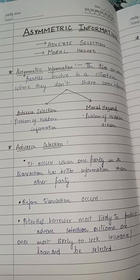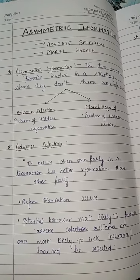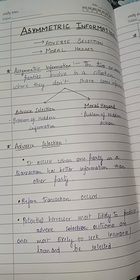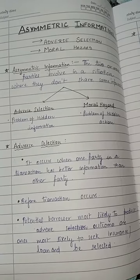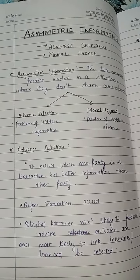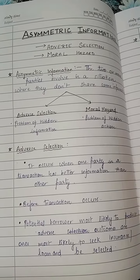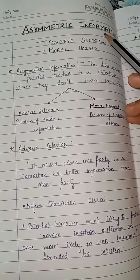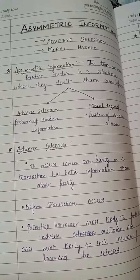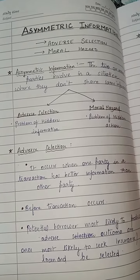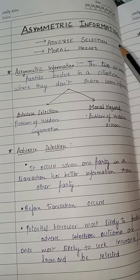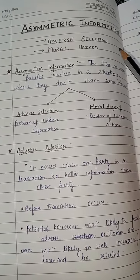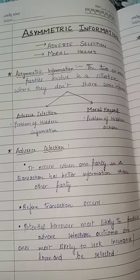Hello everybody, welcome back to my YouTube channel Economics World by Simar. Today we will study about the concept of asymmetric information and its types: adverse selection and moral hazard.